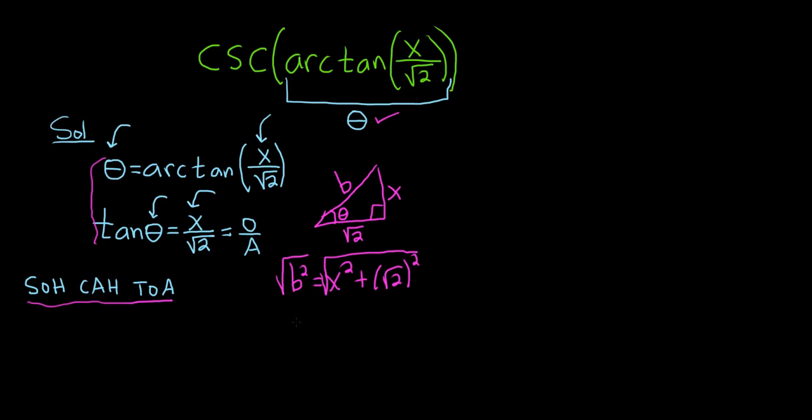Now normally when you take a square root, you're supposed to get a plus or minus. However, this is the length of the side of a triangle, so it can't be negative. So this is equal to the square root of x squared plus 2.